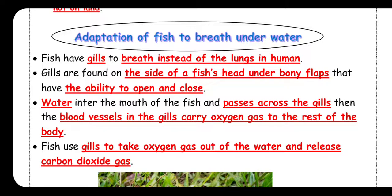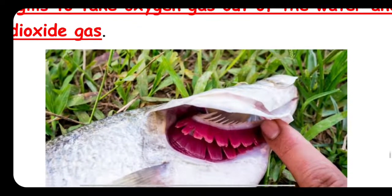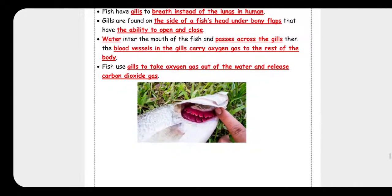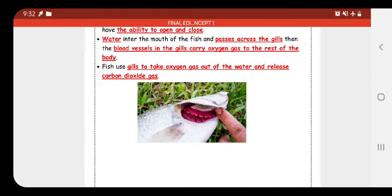You have to know that gills are found on the side of the fish's head, under something called opercular flaps. Look at this picture. The opercular flaps have the ability to open and close.